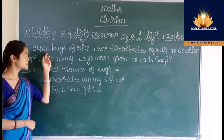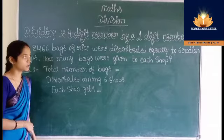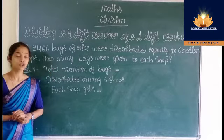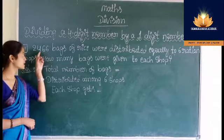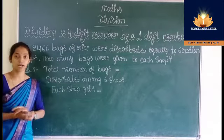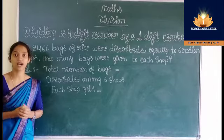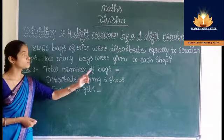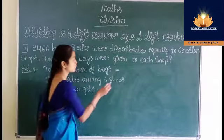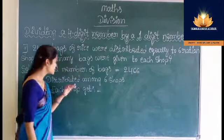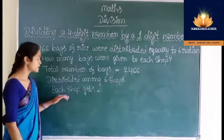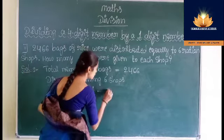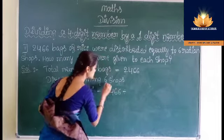2,466 bags of rice were distributed equally to 6 ration shops. How many bags were given to each shop? Total number of bags is 2,466, distributed among 6 shops. We need to find how many bags each shop gets, so we have to divide 2,466 by 6.